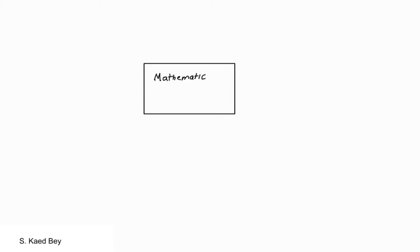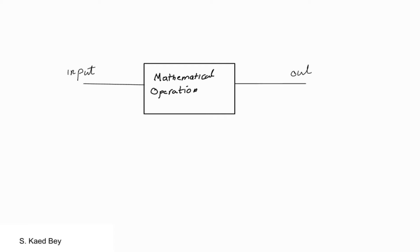Dynamic systems are represented mathematically by a set of simultaneous differential equations, and are made of multiple subsystems. Each subsystem can be represented pictorially by a box as shown here, with the input-output relationship represented by a linear operation.